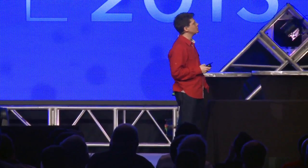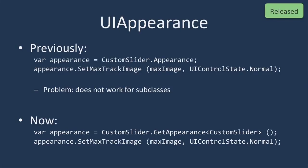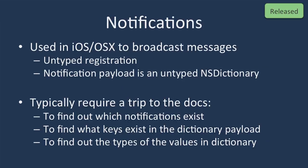We've also improved UI Appearance. It worked great for built-in widgets but not for subclasses. Now we introduced a version that allows subclasses to work. Instead of calling CustomSlider.Appearance, you call CustomSlider.GetAppearance with your derived type — that's the only change. We've also improved notifications. Notifications in Objective-C are loosely typed: you register loose types, get dictionaries with loose types, need to look up keys with loose types, guess values, do a lot of typecasting, and make many trips to the documentation. You'd end up writing 30 lines of code just to get data out. So we fixed that.